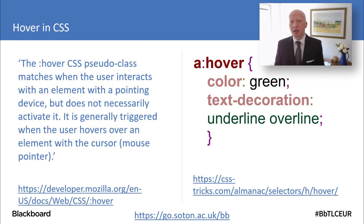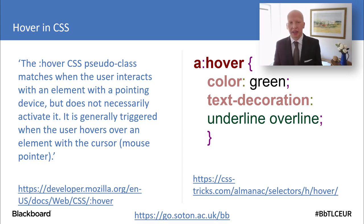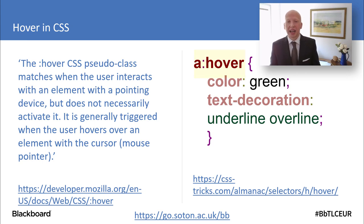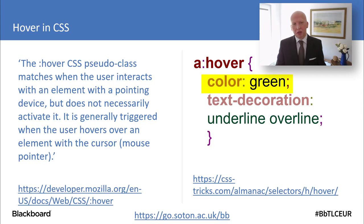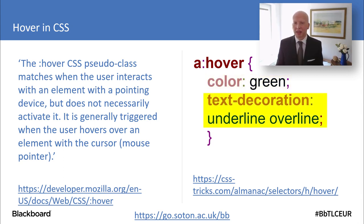If you've not considered hover before, you probably know what it is instinctively — when you move a mouse over an area on a web page and something changes, that's called a hover. In the example CSS, you can see that A means a link, and we're saying when we're hovering on a link we want to make the colour green, and we can also add an underline and an overline, and you can do quite a few other cool things.